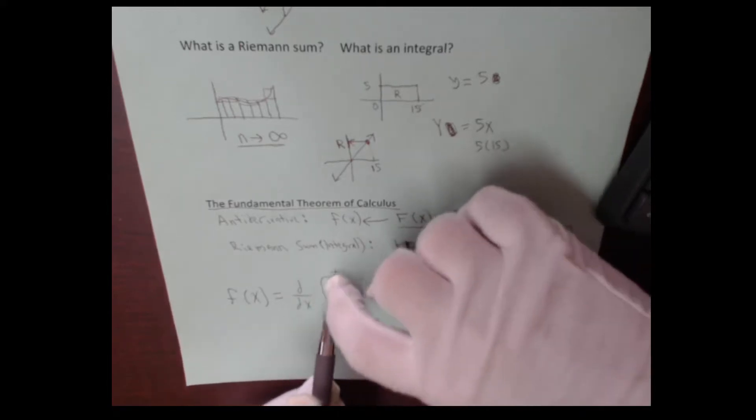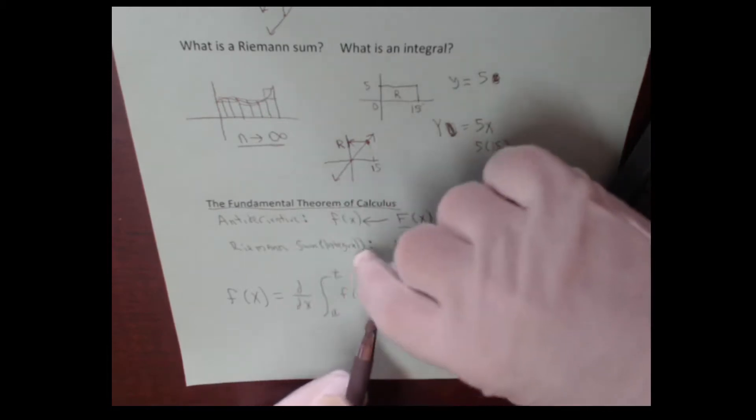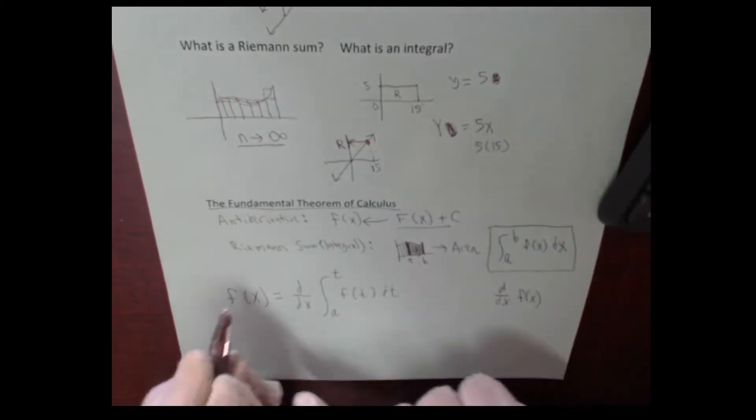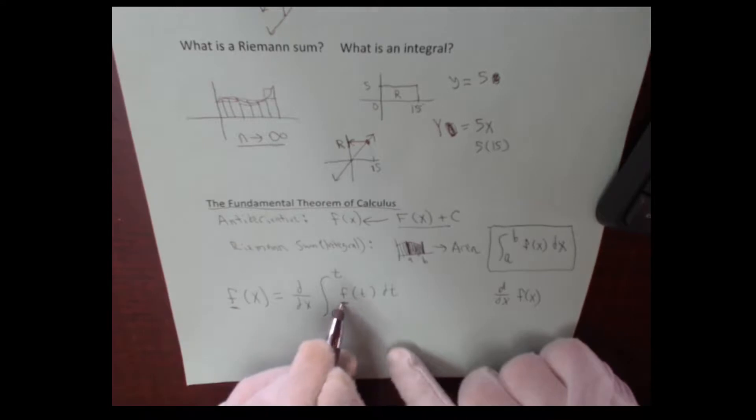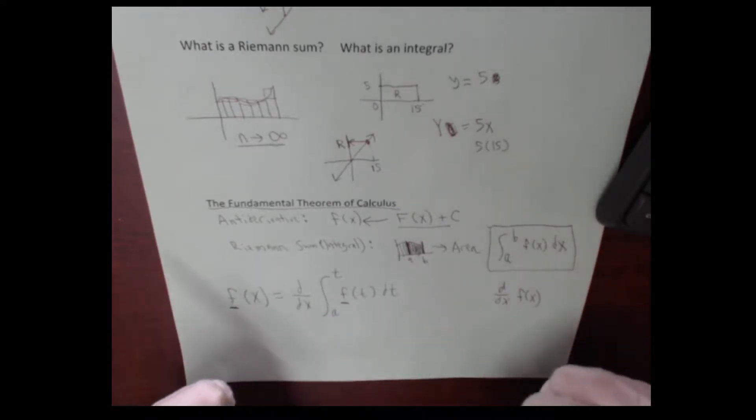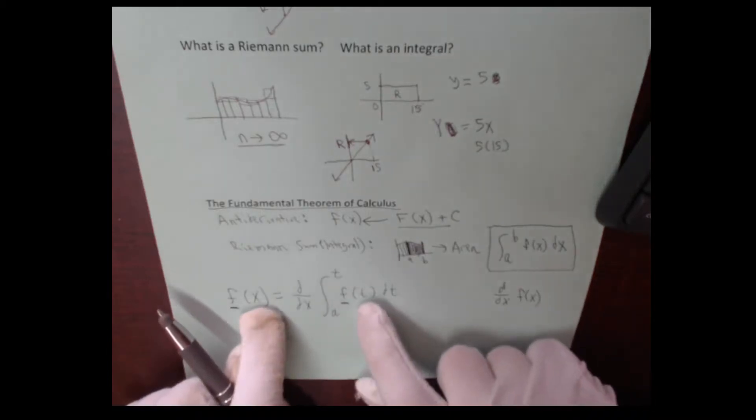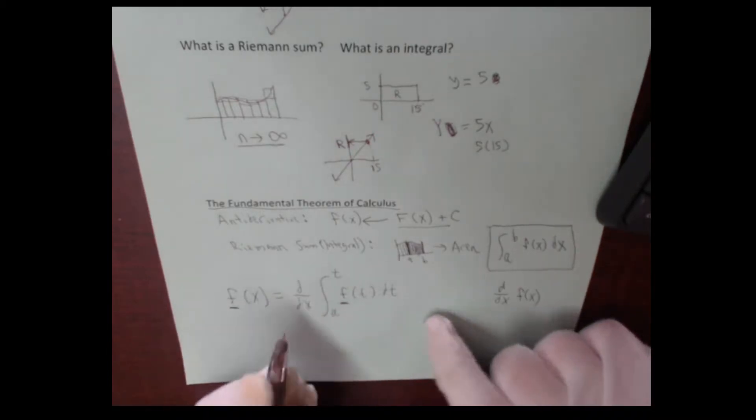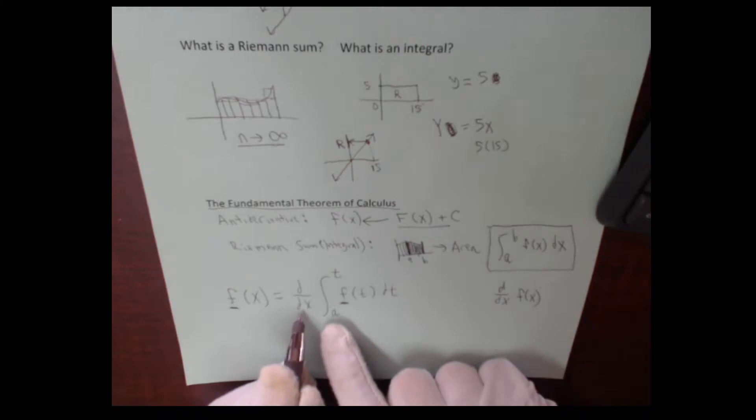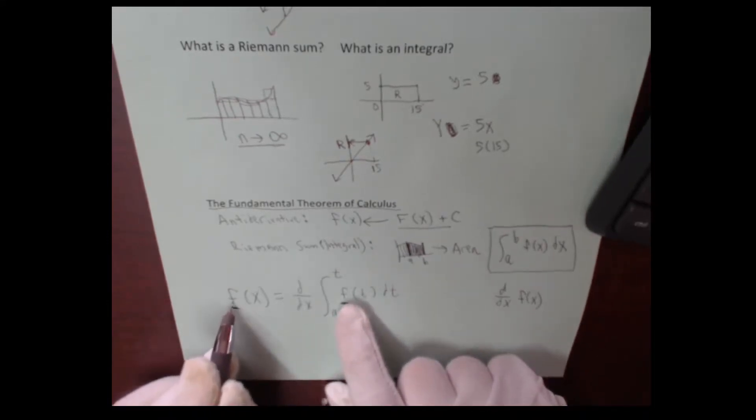But what this is saying is that if you have a function, and you take an integral of it, and then you take the derivative of that integral, you end up back at the same function again. And don't worry about the fact that t got replaced with x. That's just a way to show that it's independent of our input variable. The point is that these two operations undo each other. The derivative and the integral undo each other, and f goes to f.